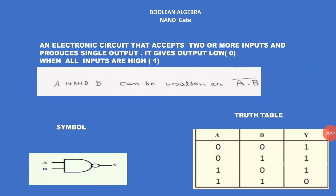NAND gate — an electronic circuit that accepts two or more inputs and produces a single output. It gives output low or zero when all inputs are high or one. A NAND B can be written as the complement of A dot B. You can see the symbol of the NAND gate, and in the truth table, A and B are the input variables and Y is the output — that is A NAND B. Where all inputs are high or one, the output is zero.